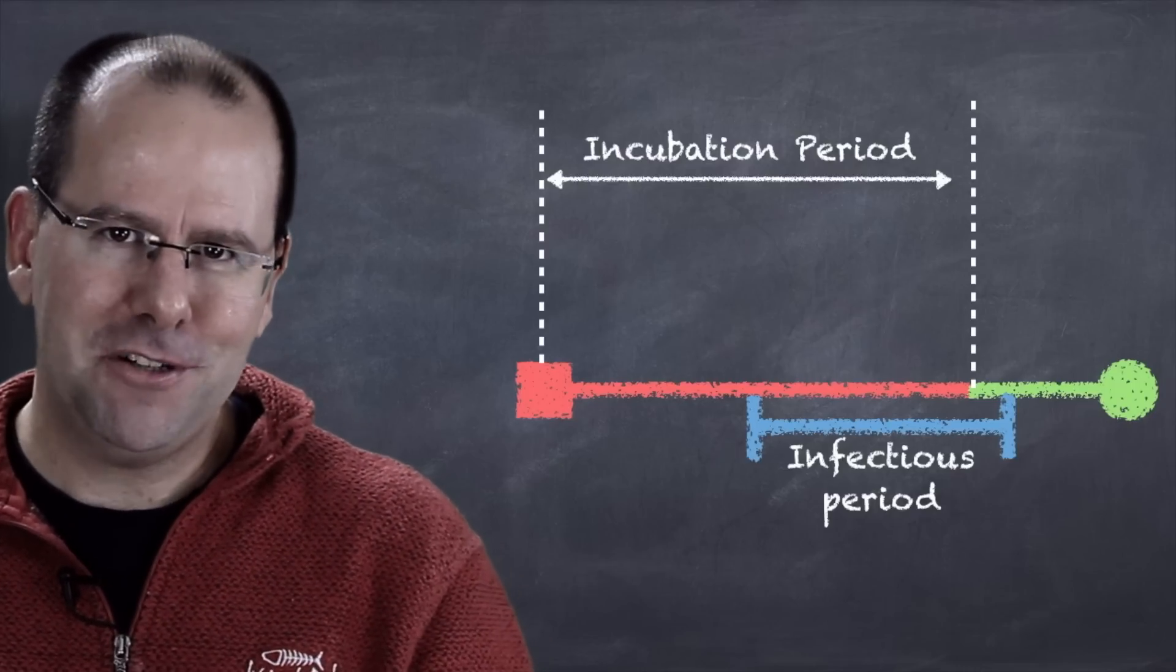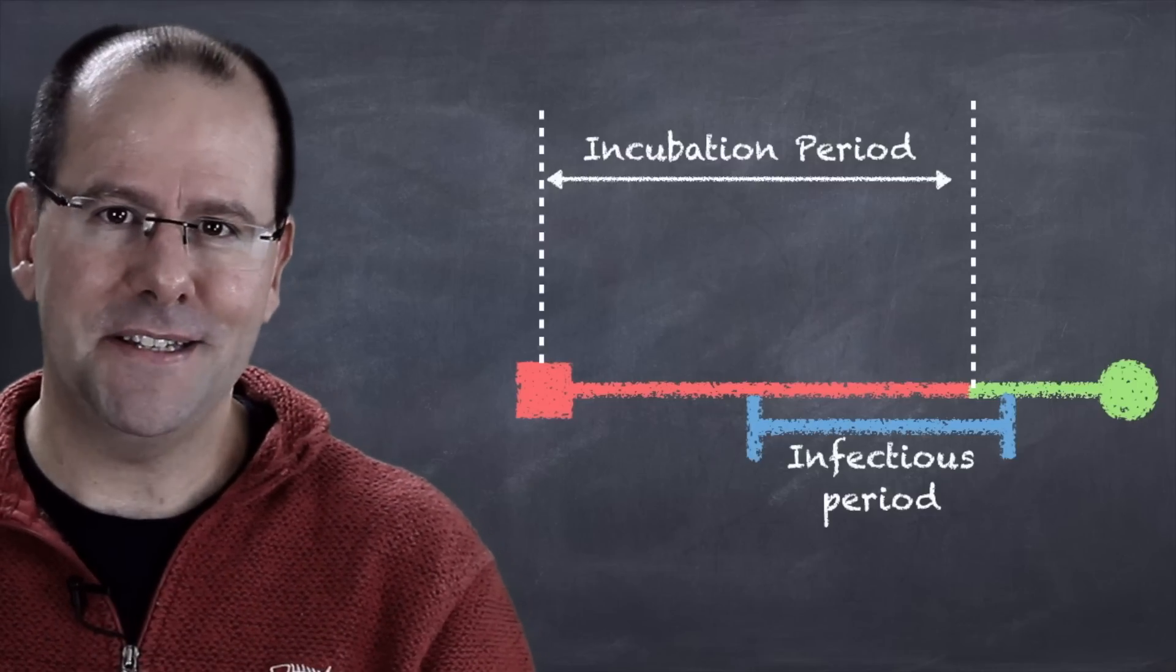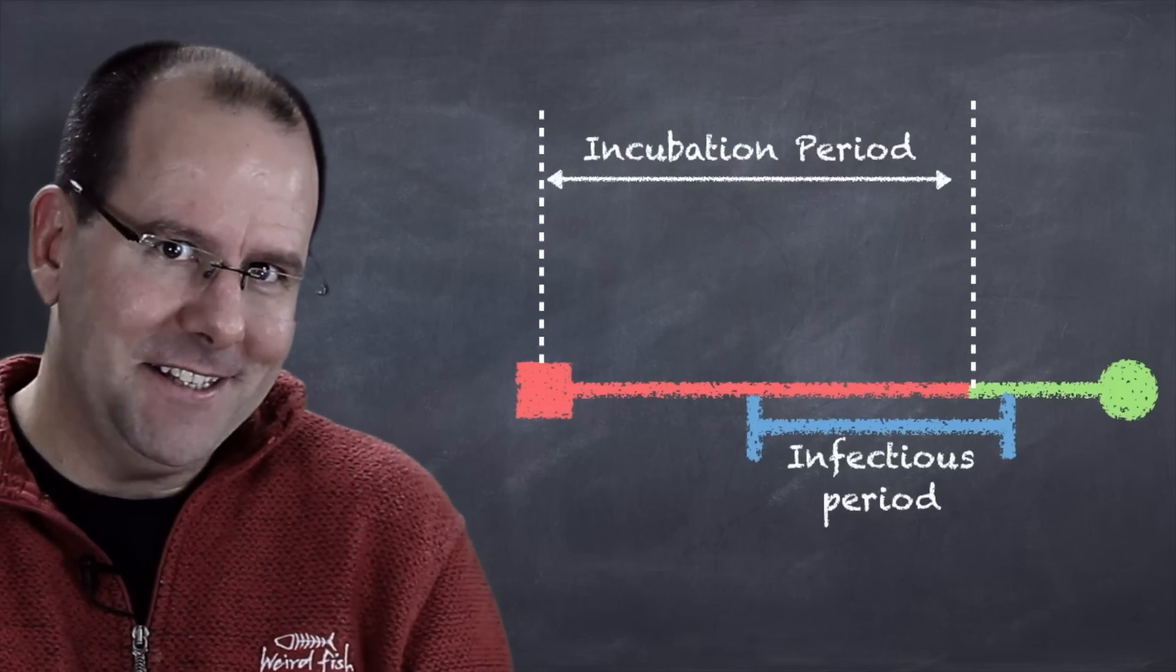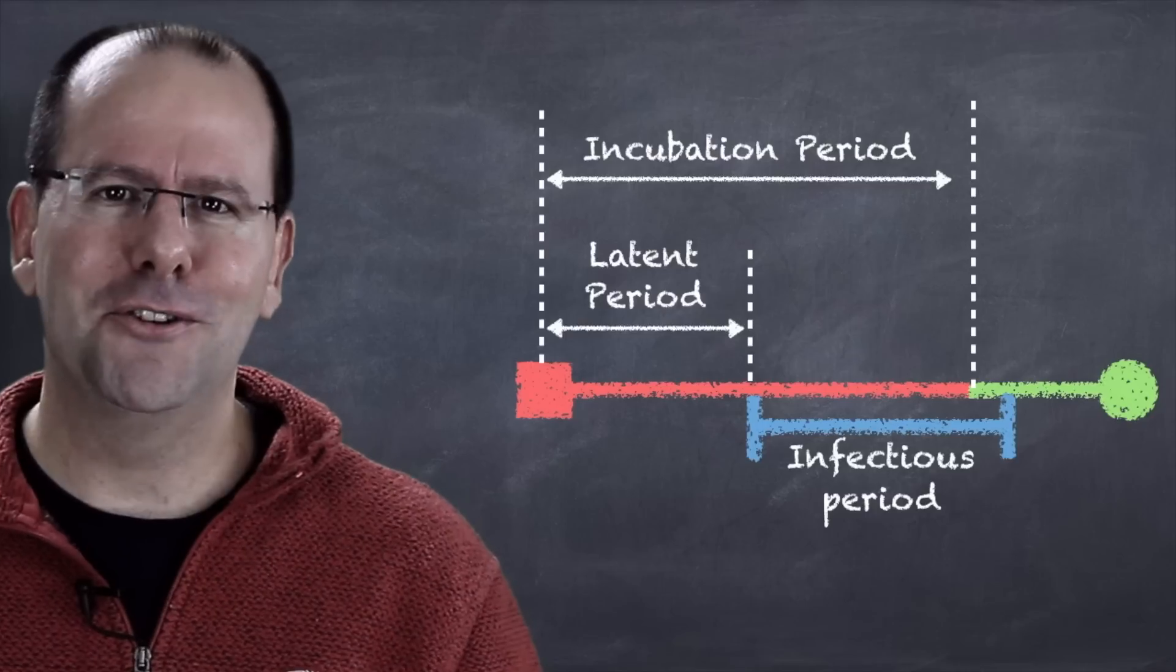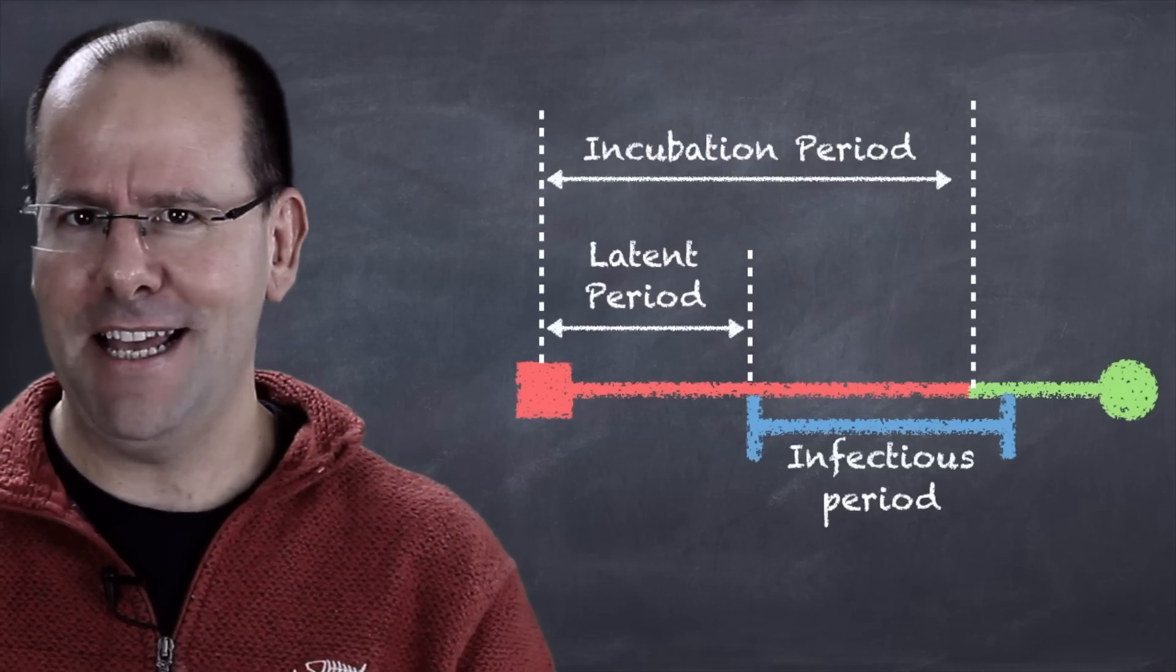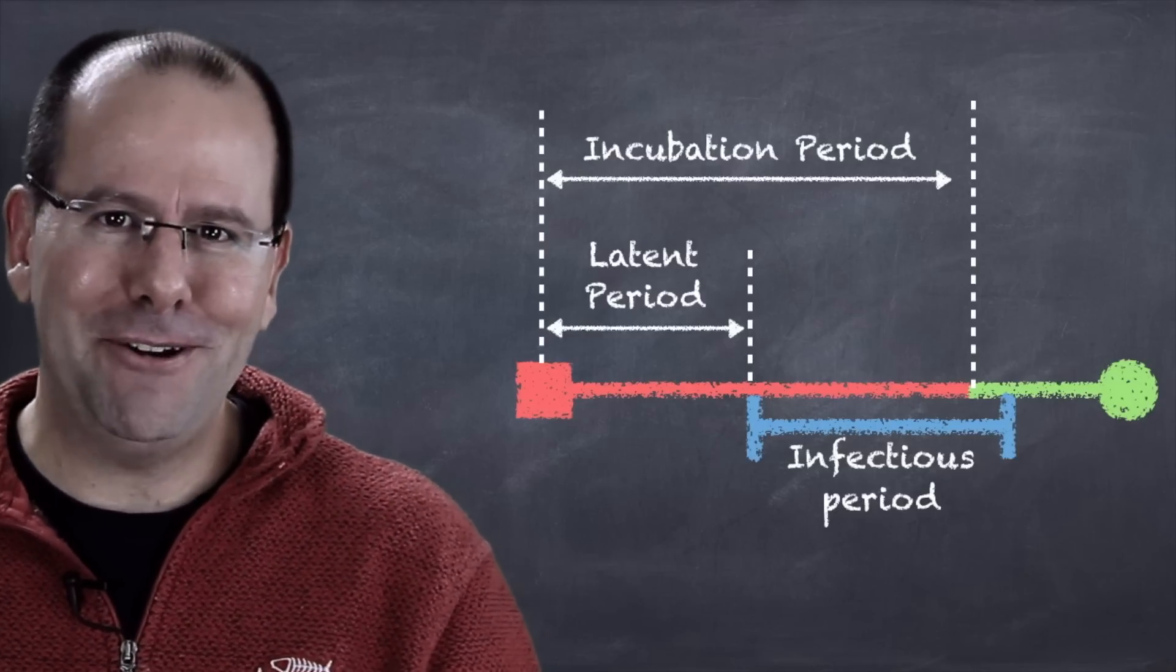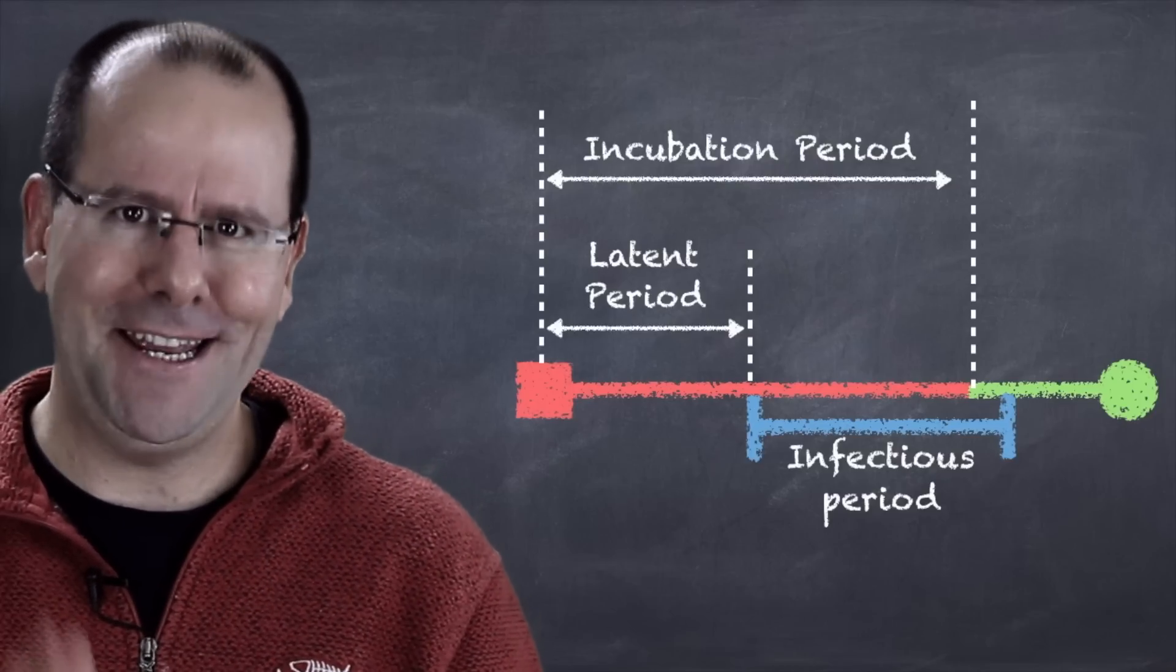Importantly, the infectious period doesn't necessarily start after the person becomes symptomatic. A person can actually be spreading the disease before they become ill. And the period of time between becoming infected and becoming infectious is what we call the latent period. So to remember this, remember that the word latent starts with L. L stands for lazy, during that period of time the virus or the microbe is too lazy to spread. And incubation period starts with in, and after the incubation period you have to stay in your house or in your bed.